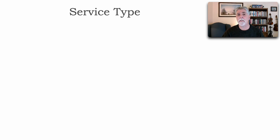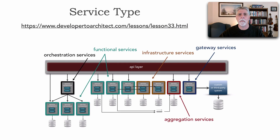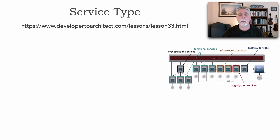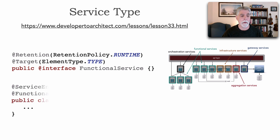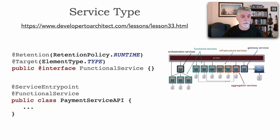Another very common annotation I use is the service type. In lesson 33 I showed you a service taxonomy — all the various types of microservices you can have within a microservices ecosystem: functional, infrastructure, orchestrators, aggregators, adapters, data services, etc. I indicated in lesson 33 the importance and roles of these services. This is where I also use a custom annotation or attribute. For example, to denote a functional service I'll create a 'FunctionalService' annotation, and on the payment service entry point I can now denote this as a functional service.